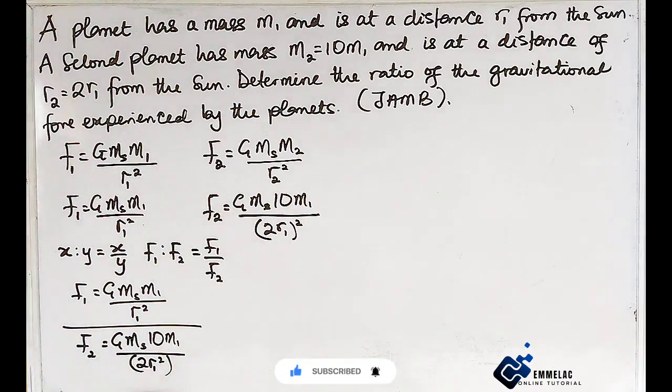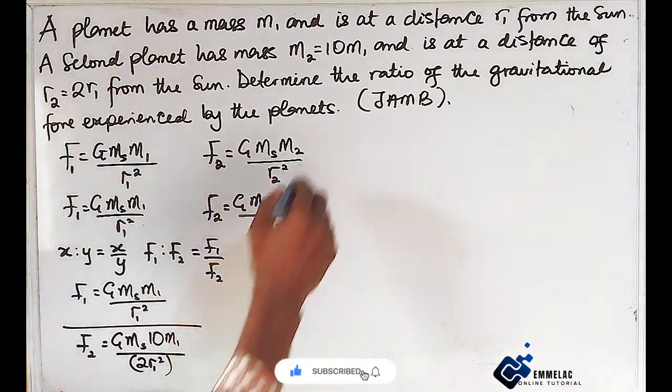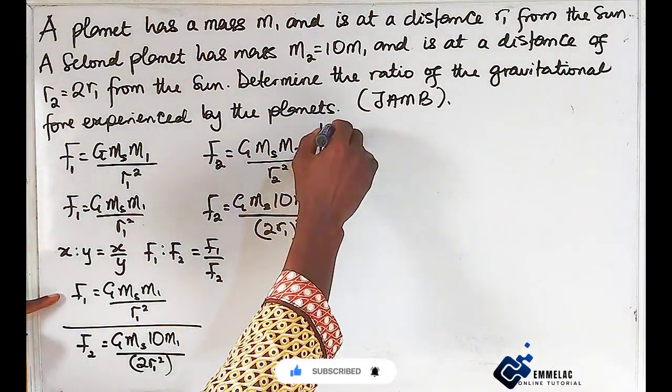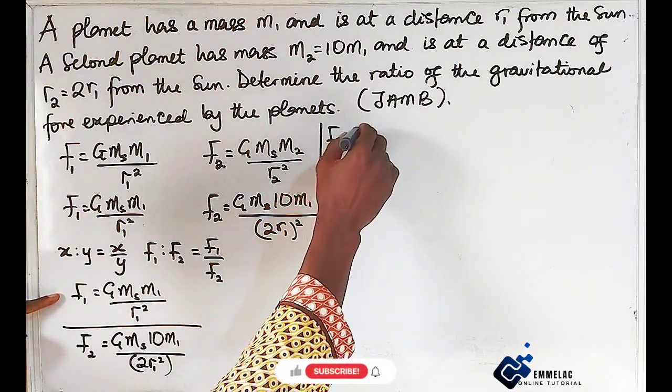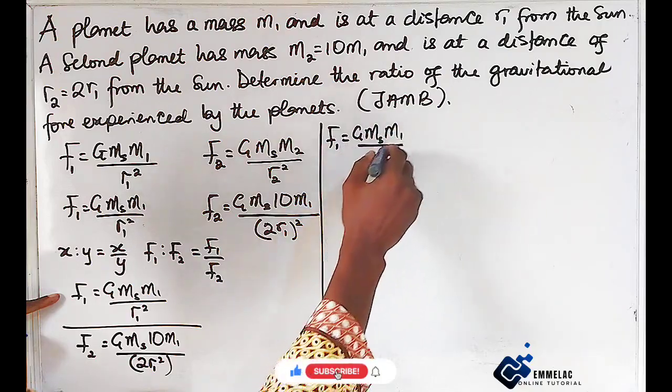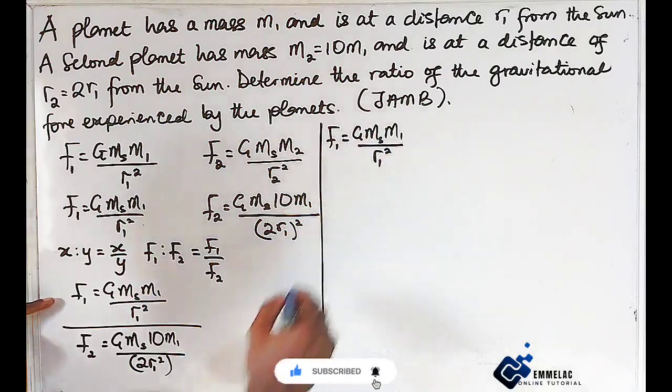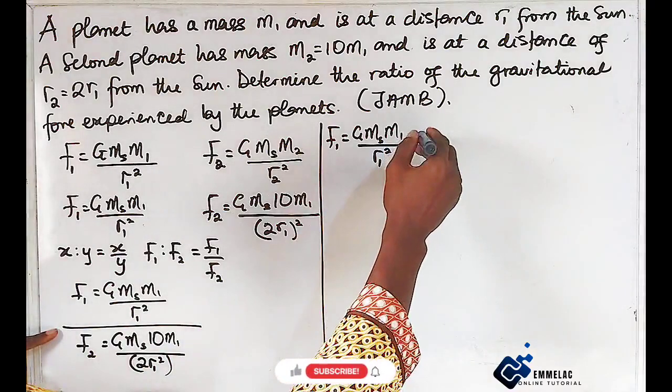Let us begin to simplify the process. F1 = GMsm1/r1² divided by F2 which is GMs(10m1)/(2r1)².